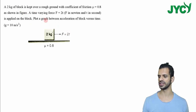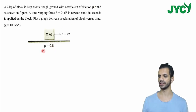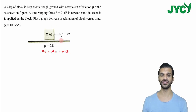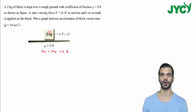There is a 2 kg block which is kept on rough ground with a coefficient of friction 0.8. So both mu_s and mu_k have the value 0.8. A time-varying force equal to 2t is applied on this block. We need to plot a graph of acceleration of the block versus time.